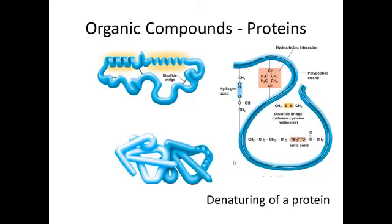You can also denature proteins with things like Clorox bleach, but you wouldn't want to eat it. Generally we pick denaturing agents that come and go or don't bother us too much. We'll be talking about denaturing throughout this class.